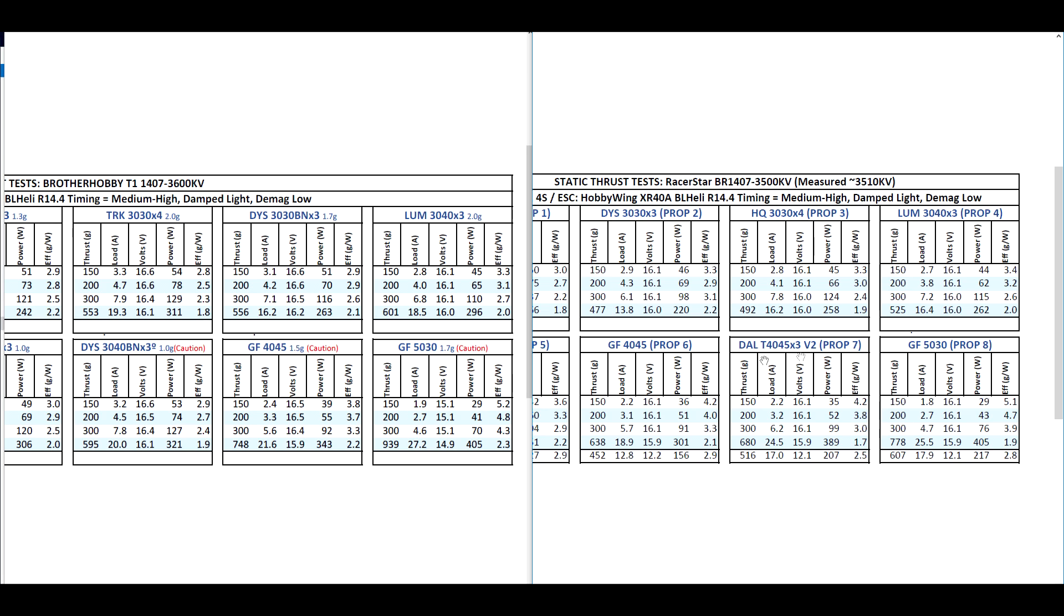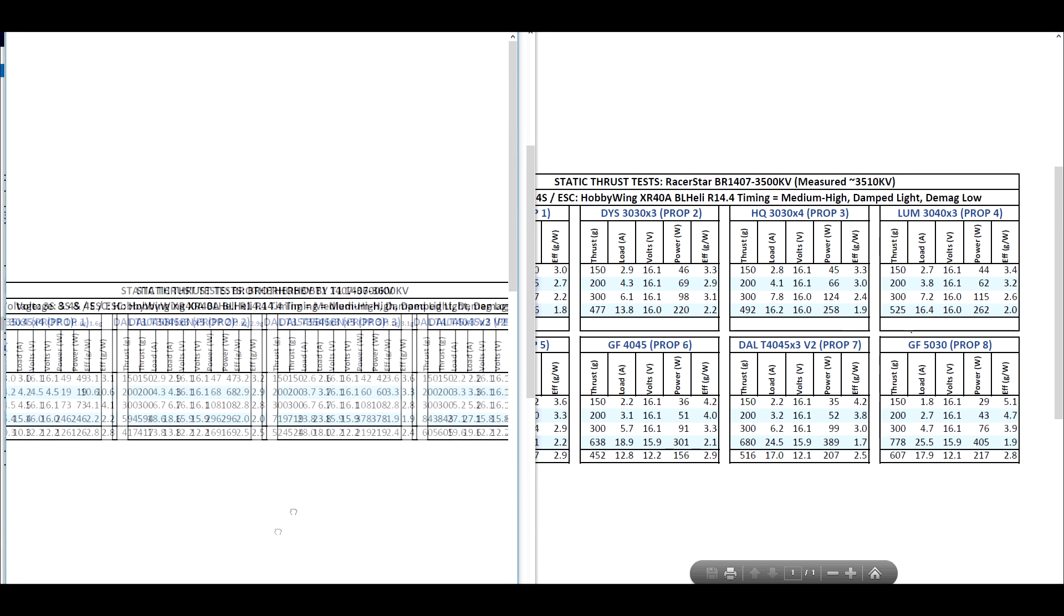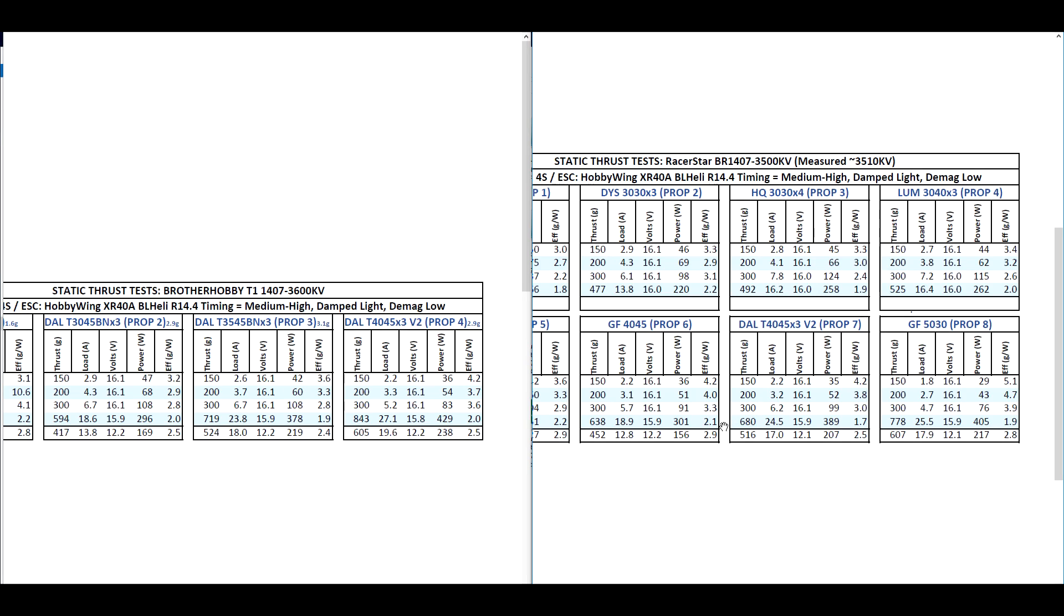And with the 4045 3-blade prop, which is the other popular prop, we are seeing about 160 grams difference. And amps are, again, about 2.5 amps difference. So yeah, with this prop, you can see how the Brother Hobby really pulls away. And on the Racer Star, like I said, heat might be a concern. So you've got to be careful with these couple of props. If you run it, just keep an eye on the temps.